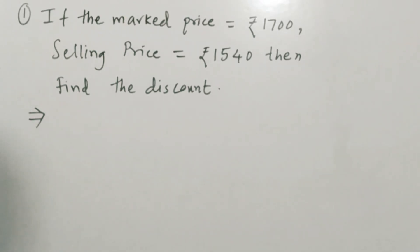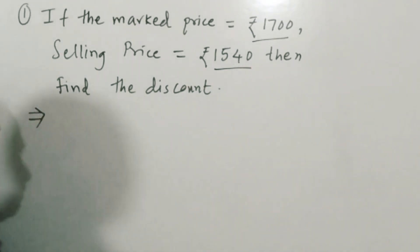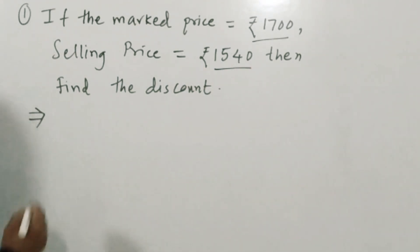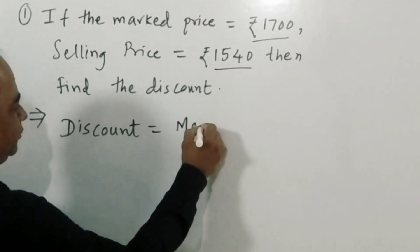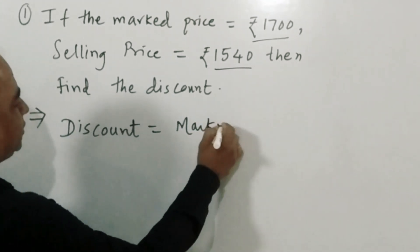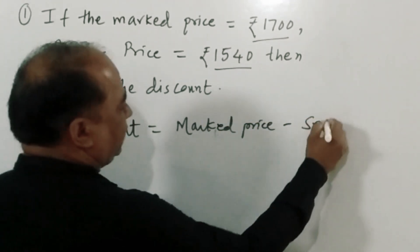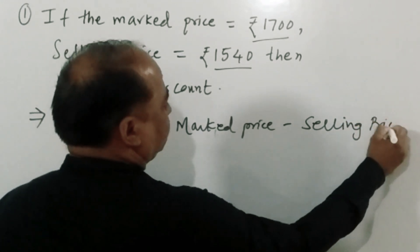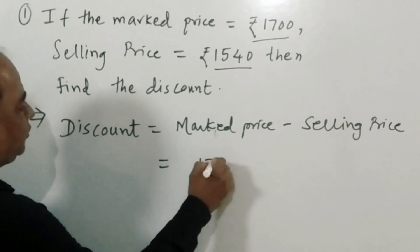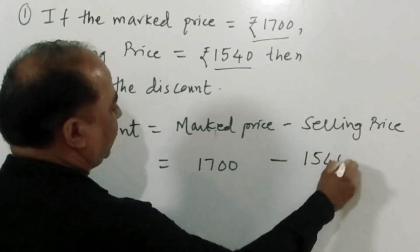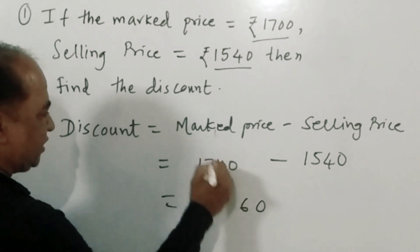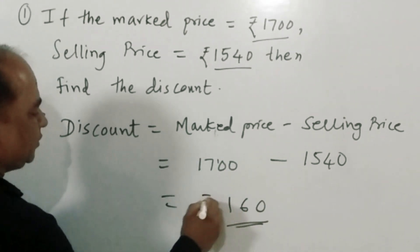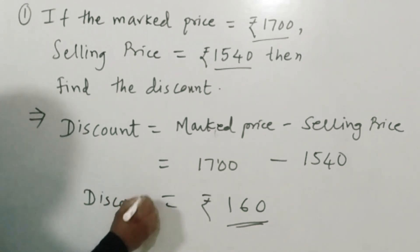First example: if mark price is equal to 1,700 and selling price is 1,540, then find the discount. We know the formula: discount is equal to mark price minus selling price. Therefore, discount is equal to 1,700 minus 1,540, which gives us rupees 160 as the amount of discount.